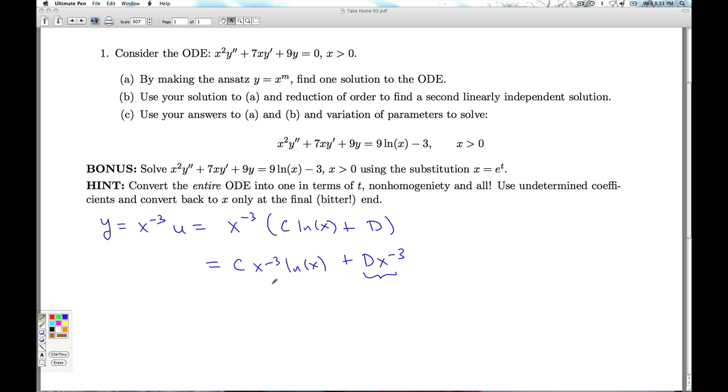So that's going to be trapped into the other solution. So really the new linearly independent function I found here is x to the minus third natural log x. So I get from my general solution c1 x to the minus third plus c2 x to the minus third natural log x.